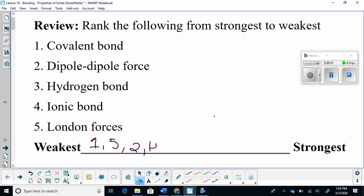Hydrogen bonding, which is number three. And lastly, the strongest type of bond is an ionic bond.